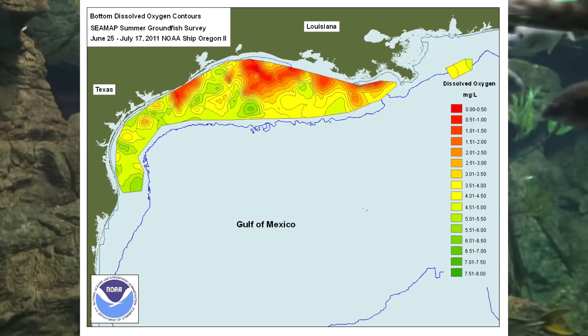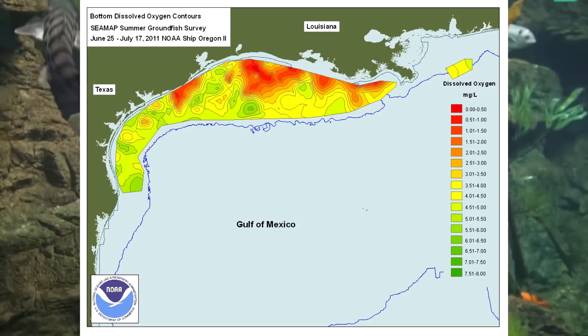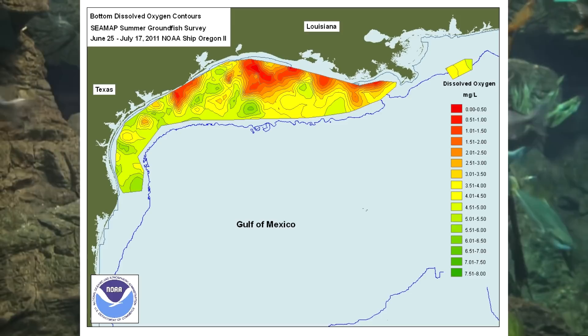Located on the inner and mid-continental shelf, the zone averages 5,300 square miles but has been as large as 8,500 square miles — about the size of Massachusetts.